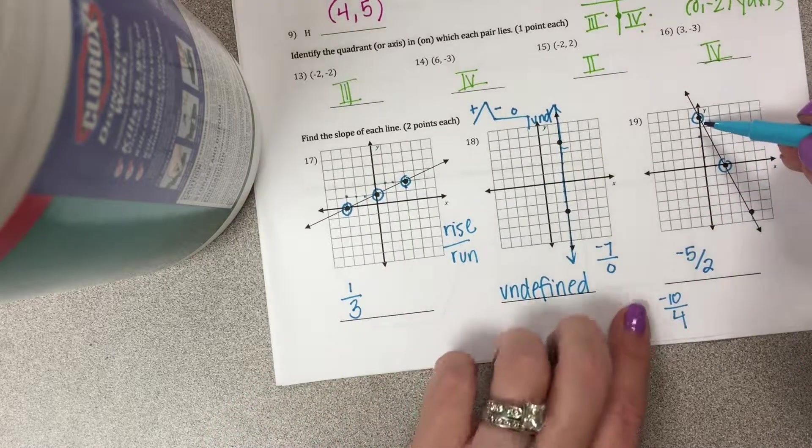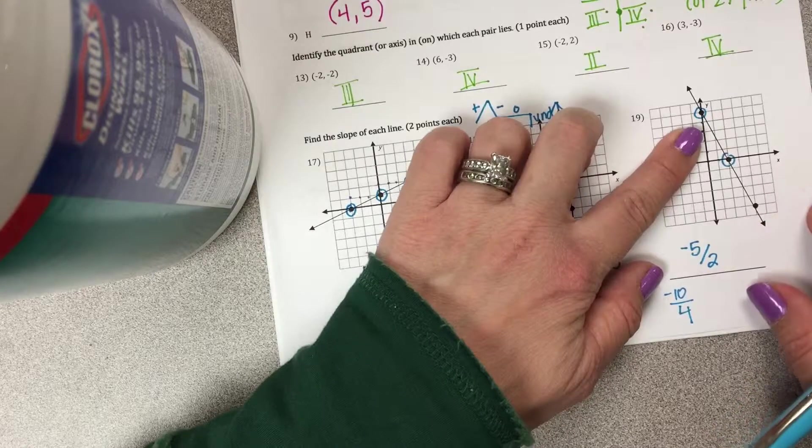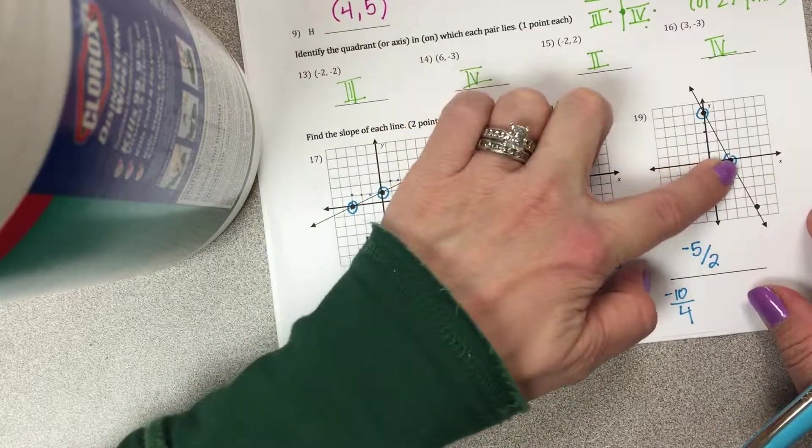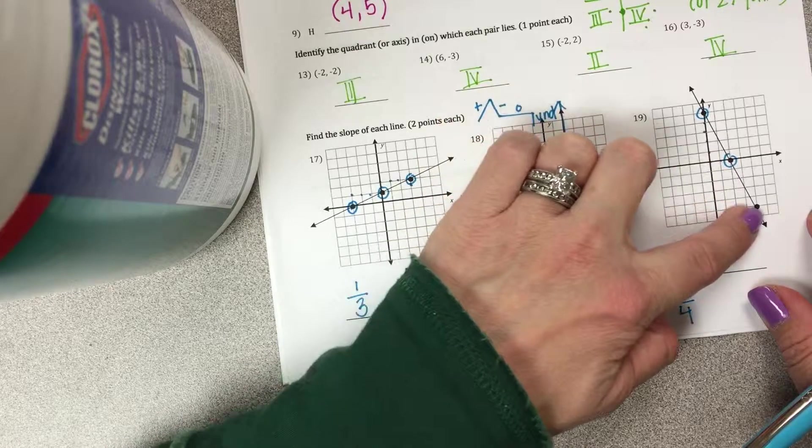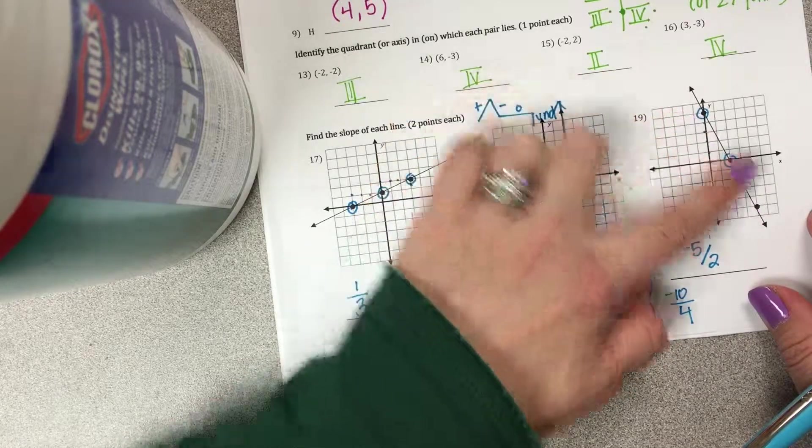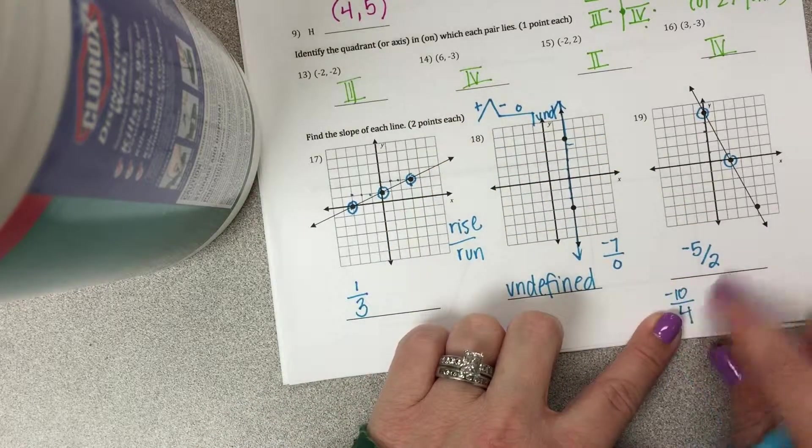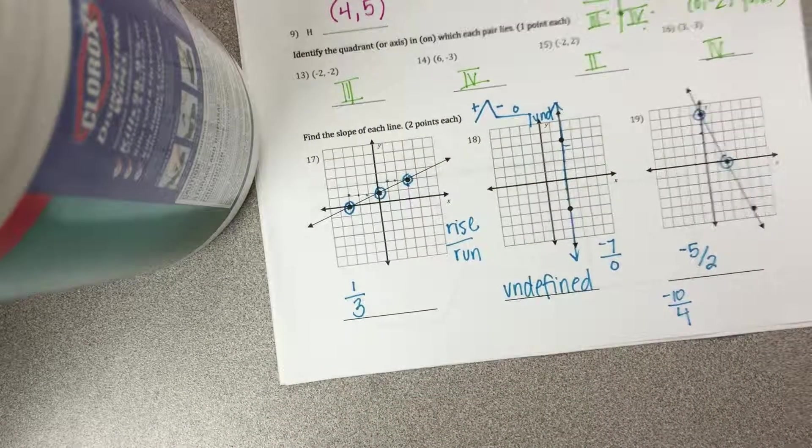And then on this last one, if I picked like this point here and I'm going to the left, I'm going down 5 over 2. Down 5 over 2. Even if I started here and went to this last one, I'd be going down 10 over 4, which would simplify to 5 over 2.